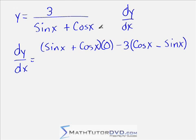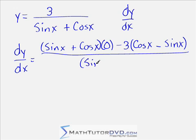So bottom times the derivative of the top minus the top times the derivative of the bottom. Derivative of sine is cosine, derivative of cosine is negative sine. And all of this stuff is going to be divided by the entire bottom function, sine x plus cosine x squared.